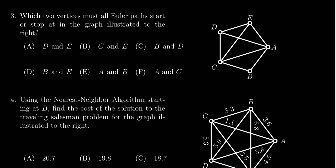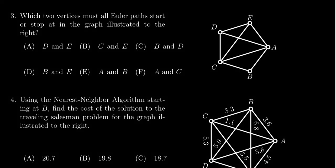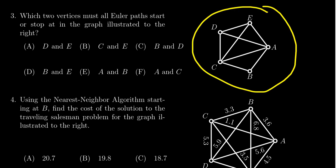In this video we provide the solution to question number three for practice exam number one for Math 1030. We're given a graph illustrated right here and we're asked which two vertices must all Euler paths start or stop at on said graph.